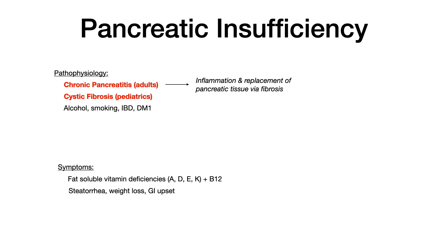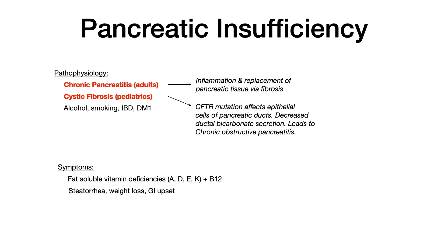In chronic pancreatitis, repeated inflammatory changes in the pancreatic tissue cause that tissue to be replaced by fibrosis over time, leaving less functional tissue and less ability for the pancreas to secrete digestive enzymes, thereby causing malabsorption. In cystic fibrosis, the CFTR mutation affects epithelial cells of the pancreatic ducts, and combined with decreased ductal bicarbonate secretion, this leads to chronic obstructive pancreatitis over time. So one way or another — adult or pediatric — it results in obstructive pancreatitis.